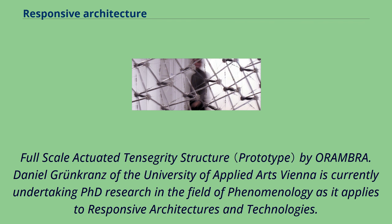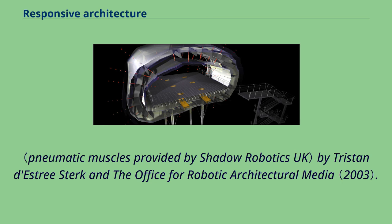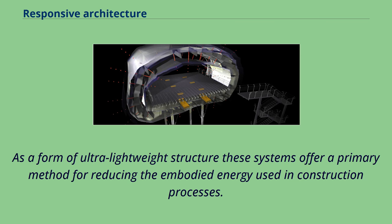Daniel Grunkrons of the University of Applied Arts Vienna is currently undertaking PhD research in the field of phenomenology as it applies to responsive architectures and technologies. Depicted is a full-scale actuated tensegrity prototype built from cast aluminium, stainless steel components and pneumatic muscles, by Tristan de Stray Sterk and the Office for Robotic Architectural Media. These types of structural systems use variable and controllable rigidity to provide architects and engineers with systems that have a controllable shape. As a form of ultra-lightweight structure, these systems offer a primary method for reducing the embodied energy used in construction processes.